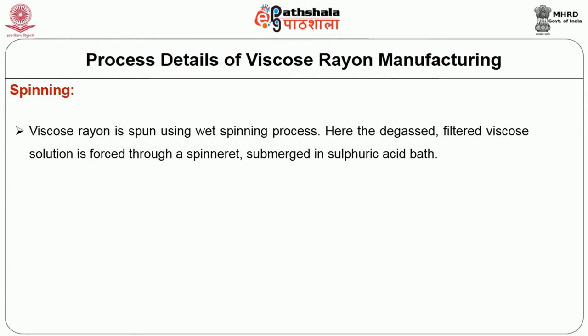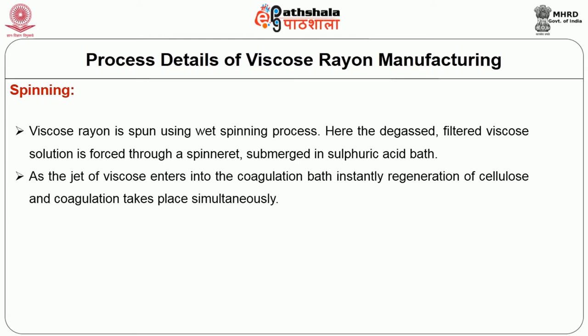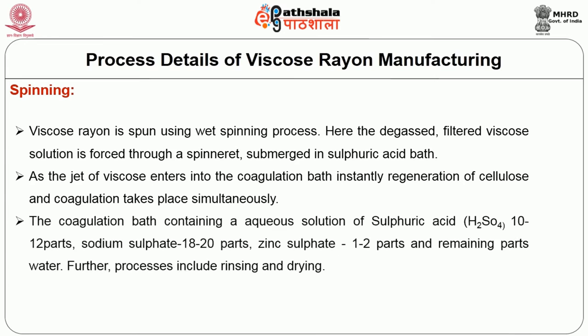Viscose rayon is spun using the wet spinning process. The degassed, filtered viscose is forced through a spinneret submerged in a sulfuric acid bath. As the jet of viscose enters the coagulation bath, instantaneous regeneration of cellulose and coagulation takes place simultaneously. The coagulation bath contains an aqueous solution of sulfuric acid (10 to 12 parts), sodium sulfate (18 to 20 parts), zinc sulfate (1 to 2 parts) and the remaining parts of water. The fiber produced is further processed by washing and rinsing to remove traces of sulfuric acid present on the surface of the fibers.